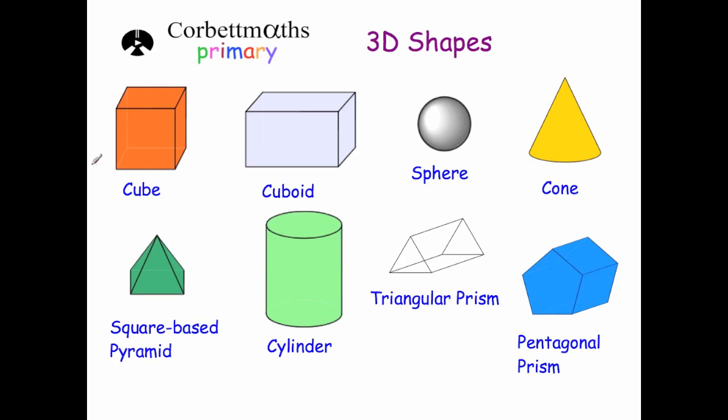Okay, so here we've got a cube, here's a cuboid, this shape is a sphere, here's a cone, this one's a square-based pyramid, this one is a cylinder, this one is a triangular prism, and this one is a pentagonal prism.